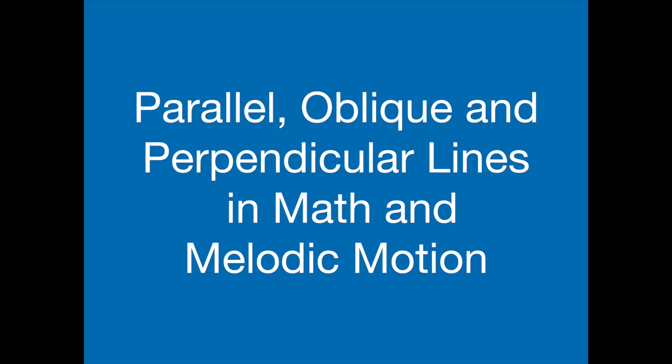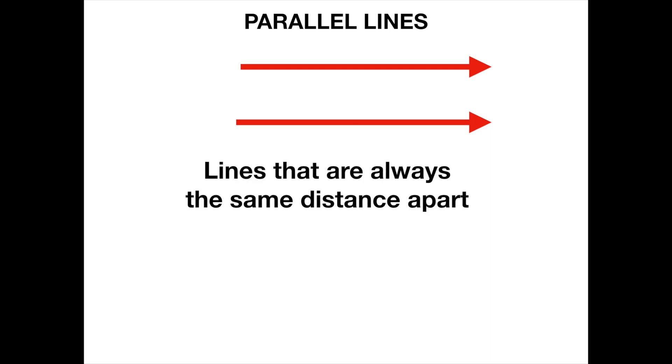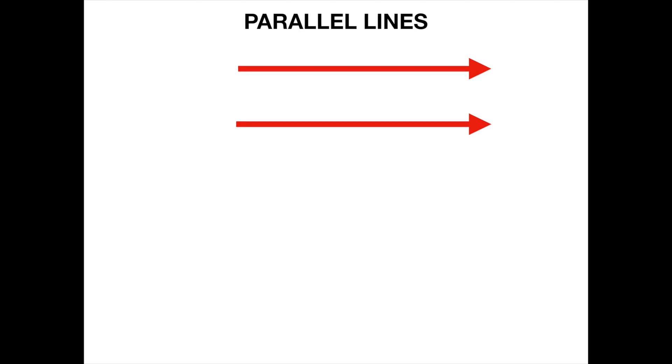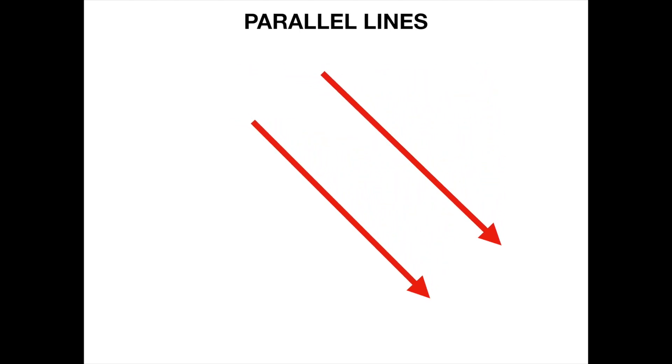So let's get started with these two lines at the top of our screen. These lines are parallel. That means they're moving in the same direction while maintaining the same distance apart from each other. No matter how I turn these lines, they stay parallel. If these lines kept on going and going, they would never connect since they maintain the same distance apart from each other.